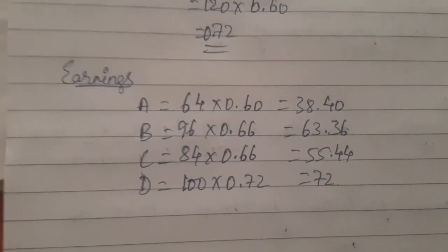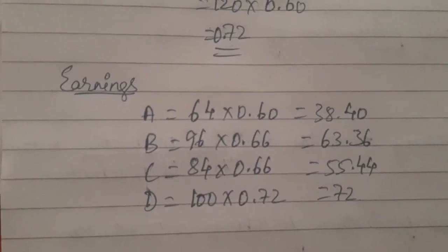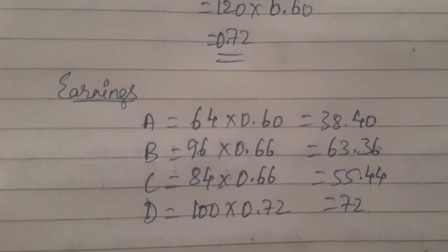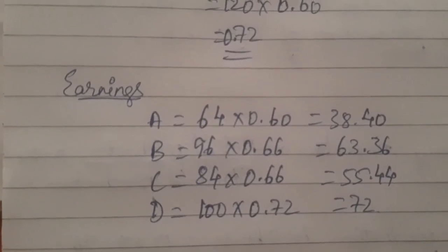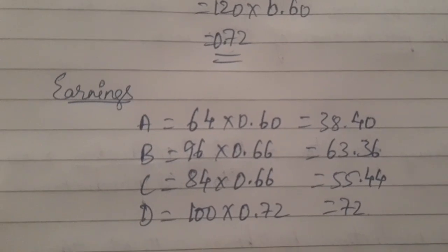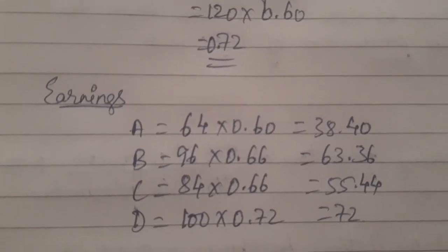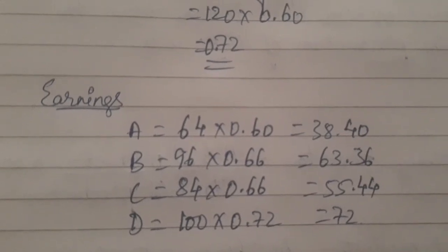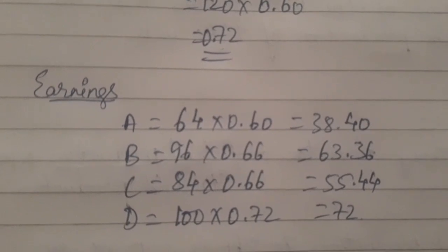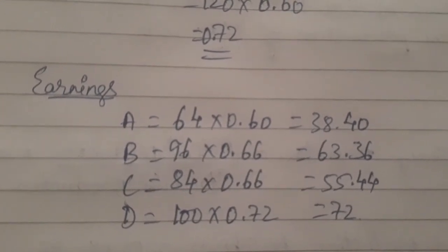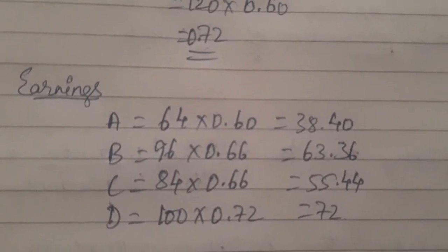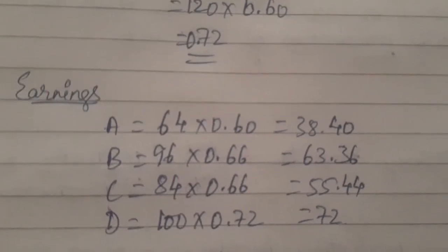Earnings: Worker A produces 64 units at 0.60 per unit = rupees 38.40. Worker B produces 96 units at 0.66 per unit = rupees 63.36. Worker C produces 84 units at 0.66 per unit = rupees 55.44. Worker D produces 100 units at 0.72 per unit = rupees 72.